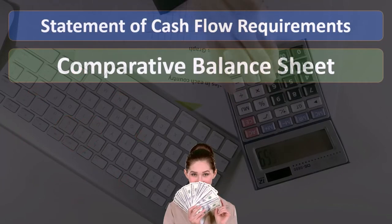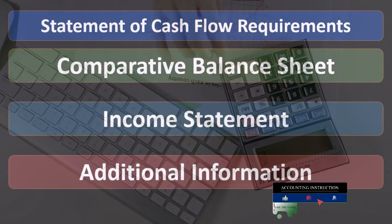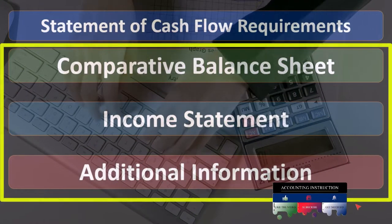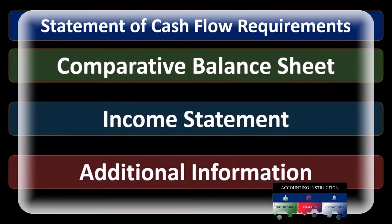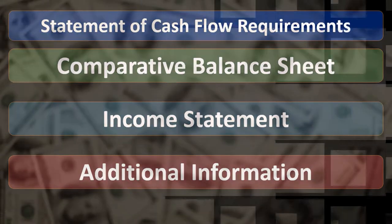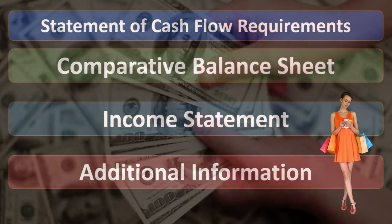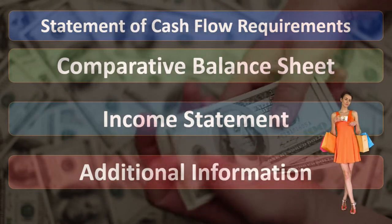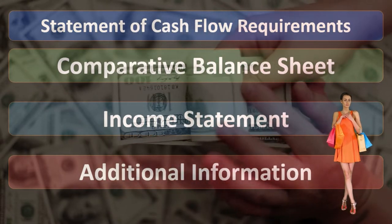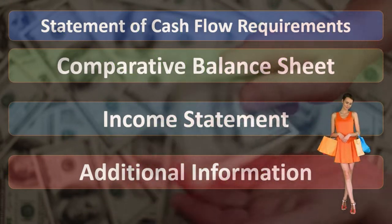We'll also need a balance sheet from the current period. Then we're going to have to have an income statement, and then we'll need some additional information. In a book problem, it'll typically give us some additional information, often having to do with things like: were there equipment purchases, were there equipment sales, were there investments in the company, were there sales of stocks, what were the dividends within the company. In practice, we would have to just know and recognize those types of areas where we might need more detail, and we would get that additional information with the general ledger.